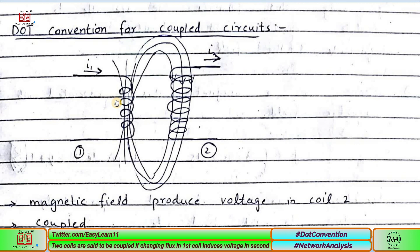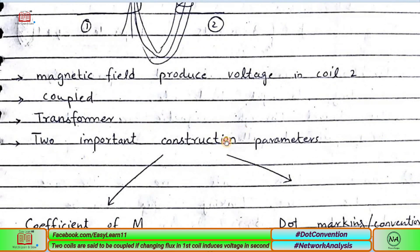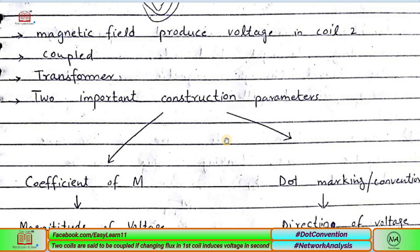If we know the construction details of the transformer, we are able to compute two important things: the magnitude and direction of the voltage induced in the secondary coil. There are two important construction parameters for coupled coils in a transformer. If we know these construction parameters, we are able to calculate two things that are really important in the transformer and any coil magnetically coupled with another.